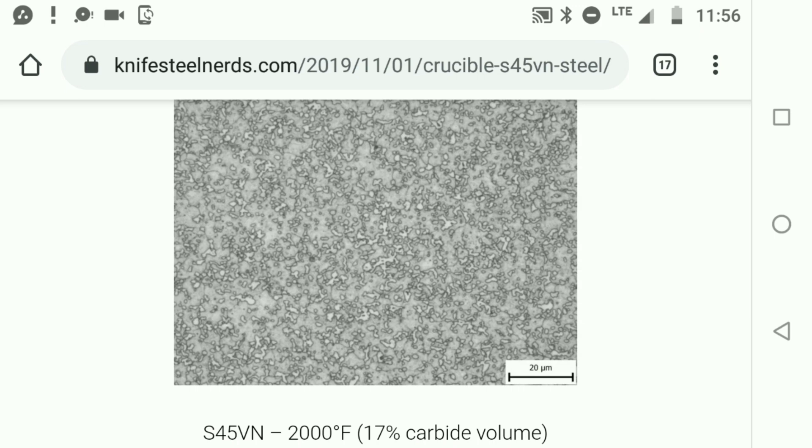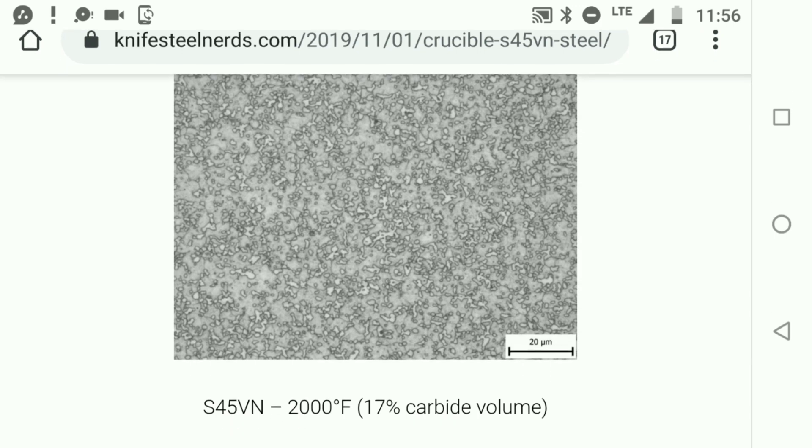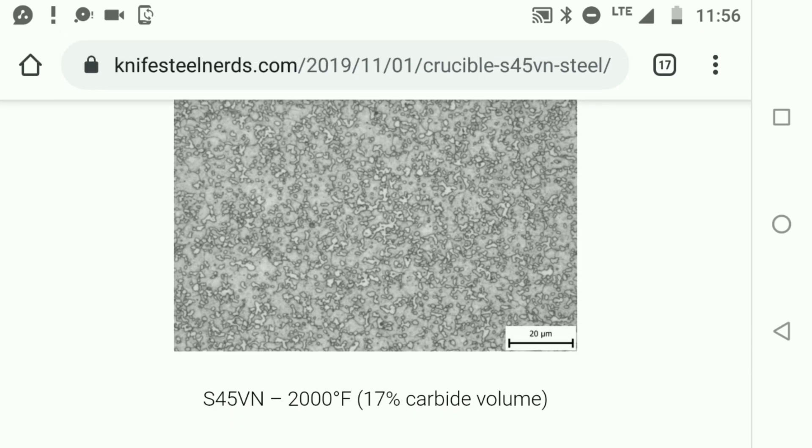So that is why S45VN is exciting. Now, I'm not saying if you get S45VN and it's soft at 56RC from some production company that's just bombing it out, not giving it a cryo or the heat treat it needs, that it's going to make up for it because it's called S45VN. Heat treat matters, all this matters. But I'm saying it's exciting for guys like me and other custom knife makers that know what they're doing to get their hands on a material like this because we can do some interesting things with it.